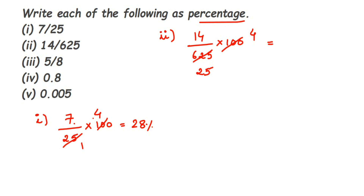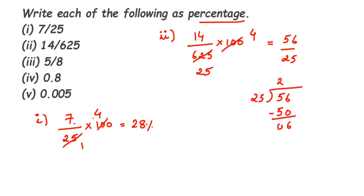Now multiply: 14 times 4 gives 56, then divide by 25. I cannot cancel further, so I divide 56 by 25. 25 twos are 50, subtract to get remainder 6, then use a decimal point and bring down a zero. 25 twos are 50 again, subtract to get 10, bring down another zero — 25 fours are 100. So we get 2.24, giving us 2.24%.